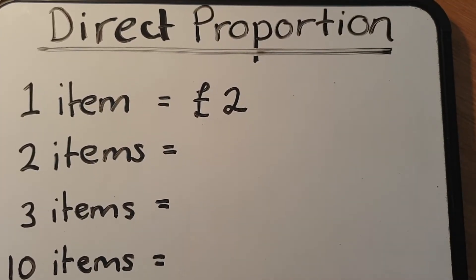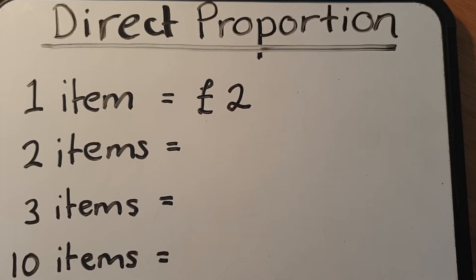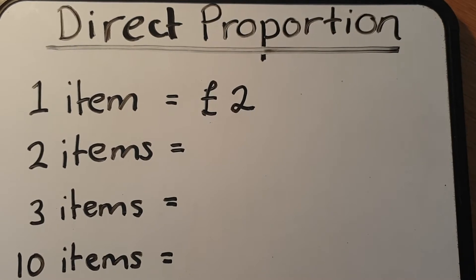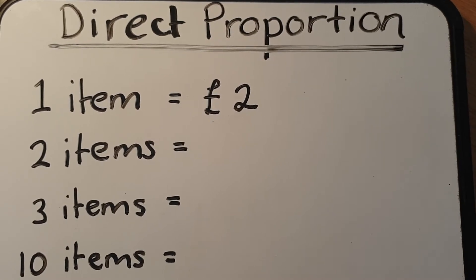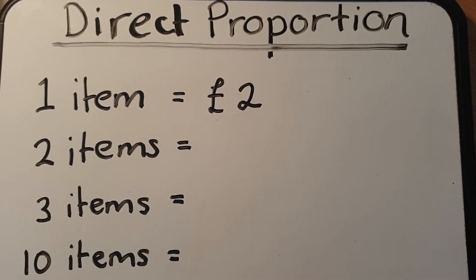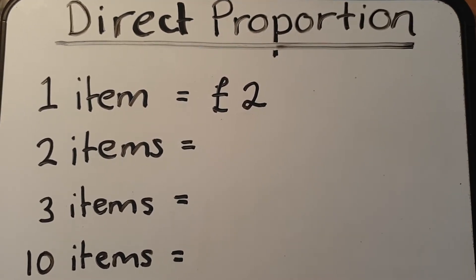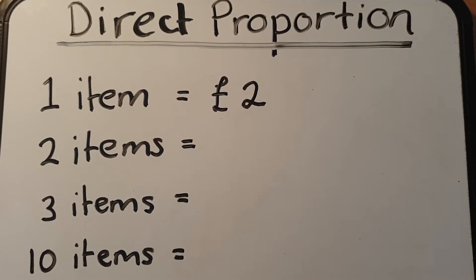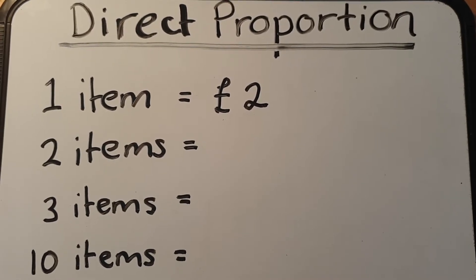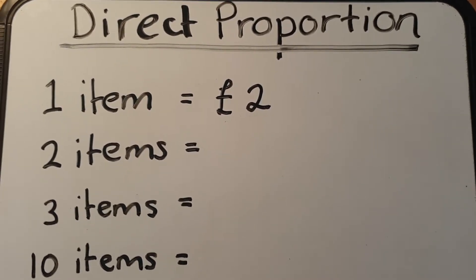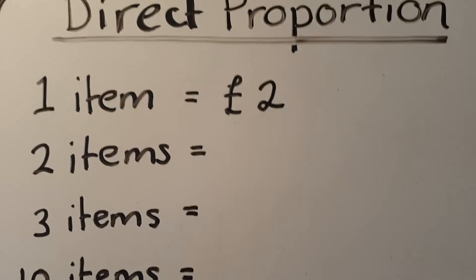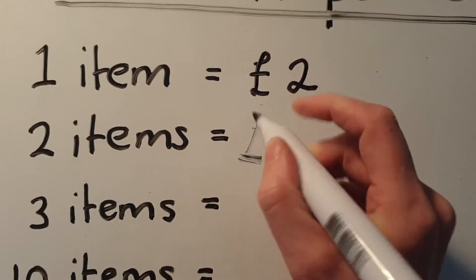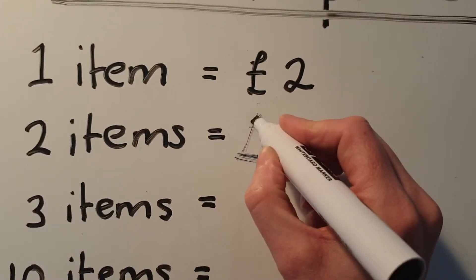This video is focusing on direct proportion. This is when as one quantity increases, so does the other quantity. So if one item costs two pounds, two items would just be double that amount. If two pounds is for one item, two items would be four pounds.